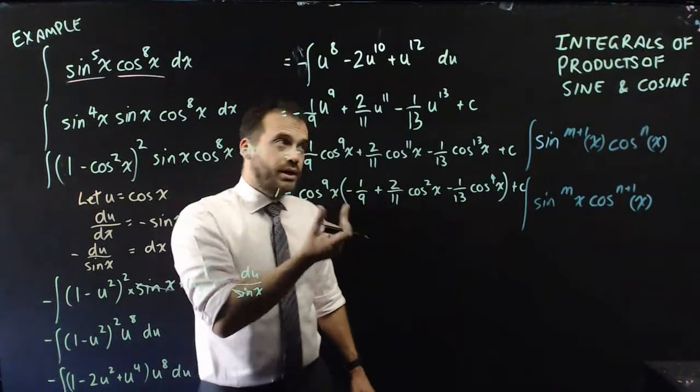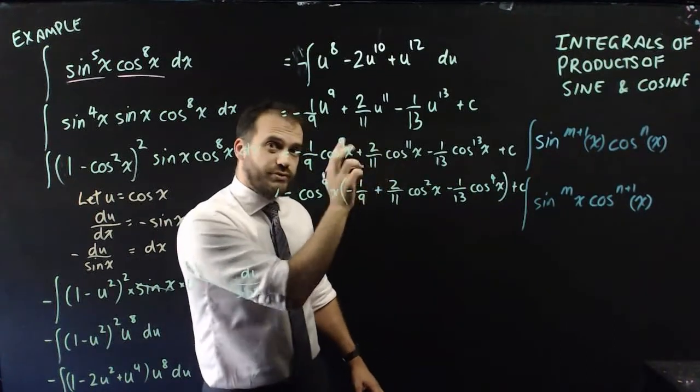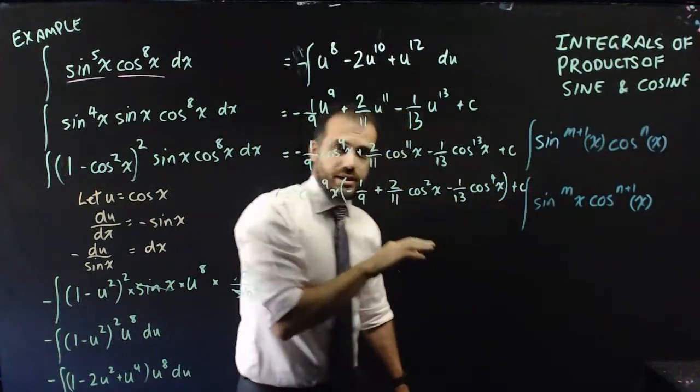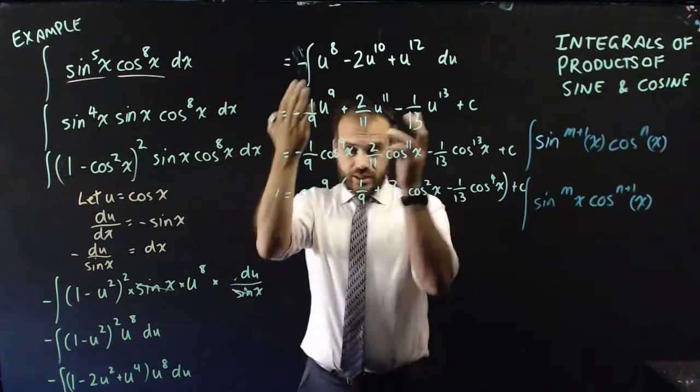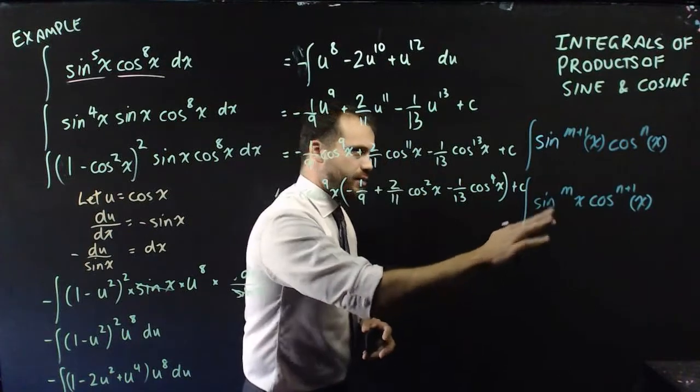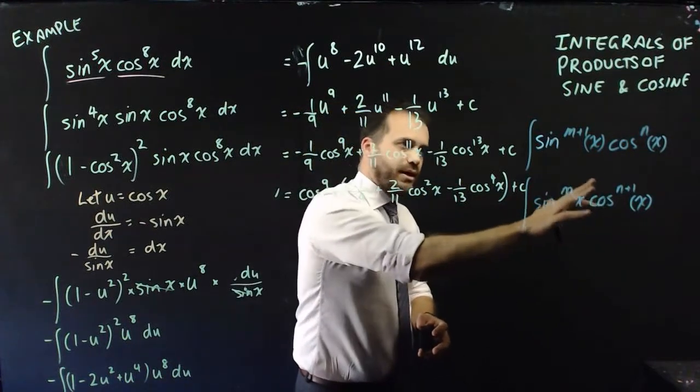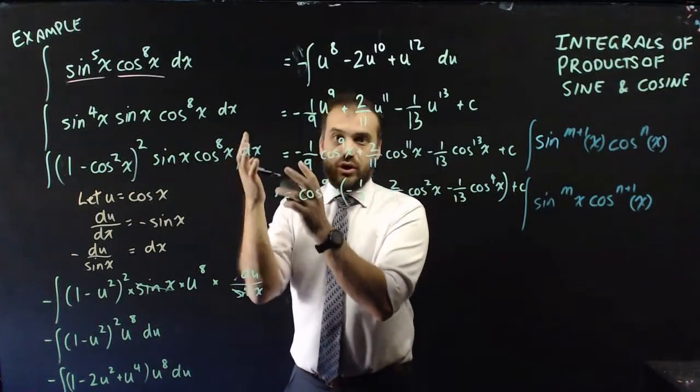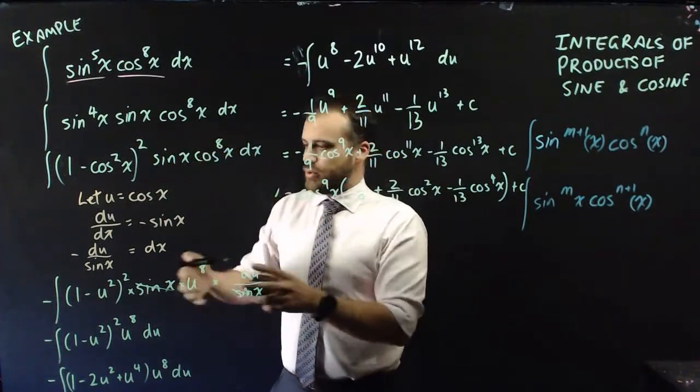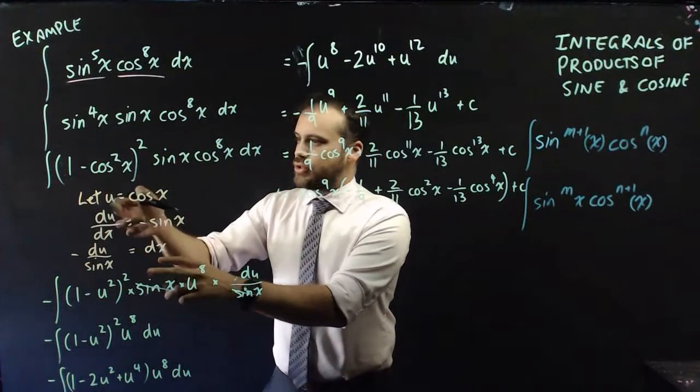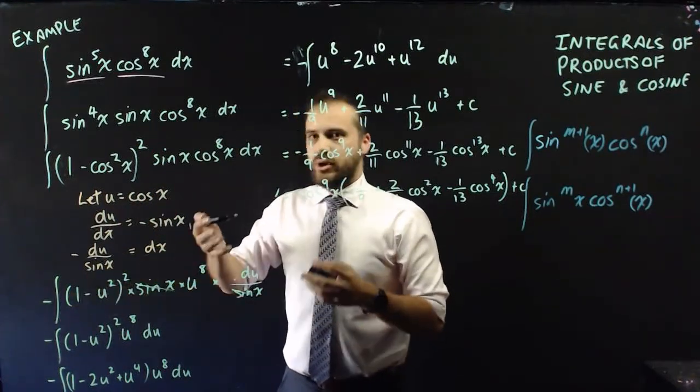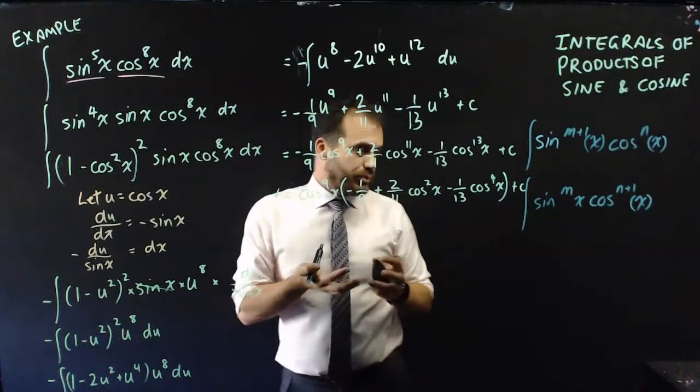So what I've shown you here is an integral of a product of sine and cosine where one of them is odd and the other one is even. Everything we've done here could be done exactly the same. If it was cosine, that was odd. In that case, we would be doing whatever it is to the odd cosine, and then we do our let u equal sine x, not cos x, and then we do like a 1 minus u squared for whatever that odd one was.